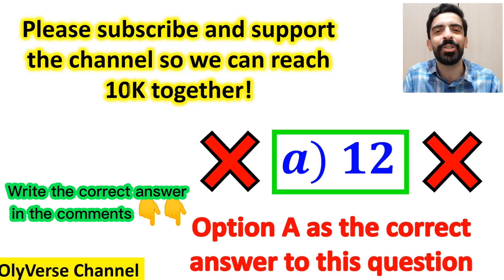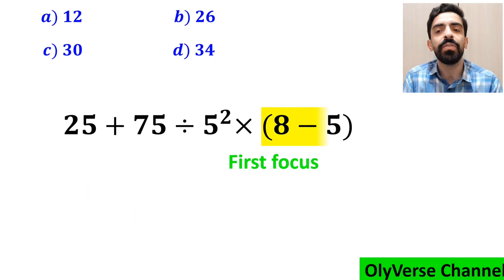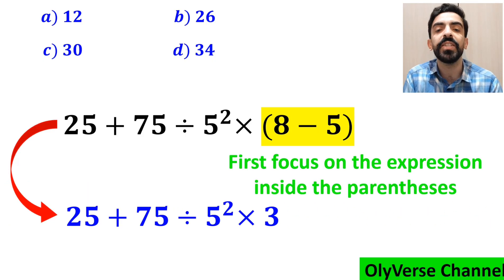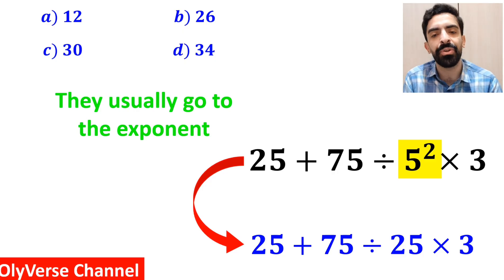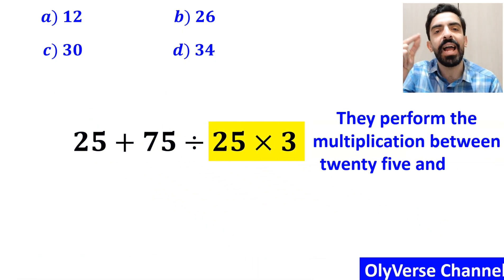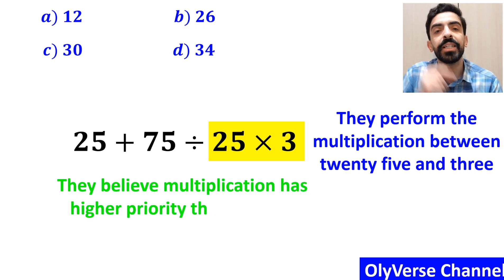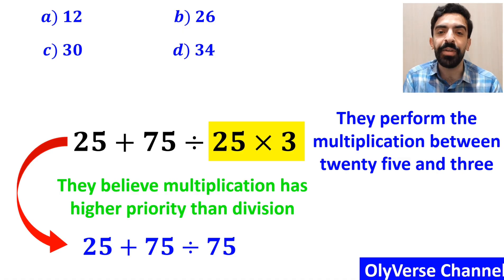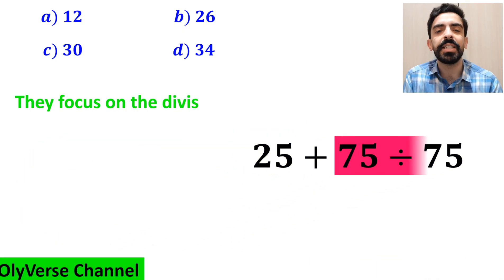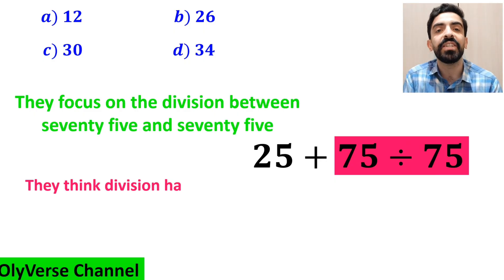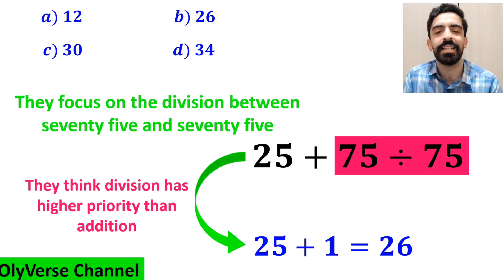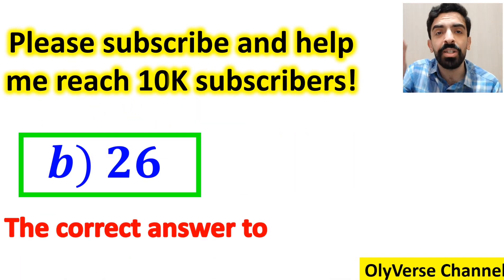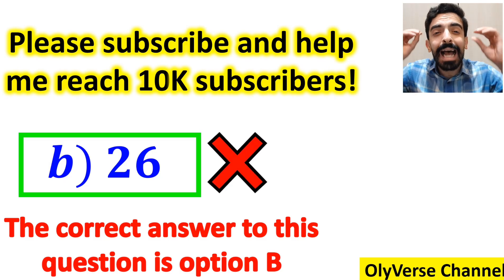Also, some other people when solving this question first focus on the expression inside the parenthesis and replace the whole expression with 25 plus 75 divided by 5 to the power of 2 multiplied by 3. In the next step, they go to the exponent and simplify it to 25 plus 75 divided by 25 multiplied by 3. Then they perform the multiplication between 25 and 3, believing multiplication has higher priority than division, rewriting the expression as 25 plus 75 divided by 75. Finally, they focus on the division between 75 and 75, thinking division has higher priority than addition, replacing the expression with 25 plus 1, which gives the answer 26. They conclude that the correct answer is option B. However, this answer is absolutely wrong.